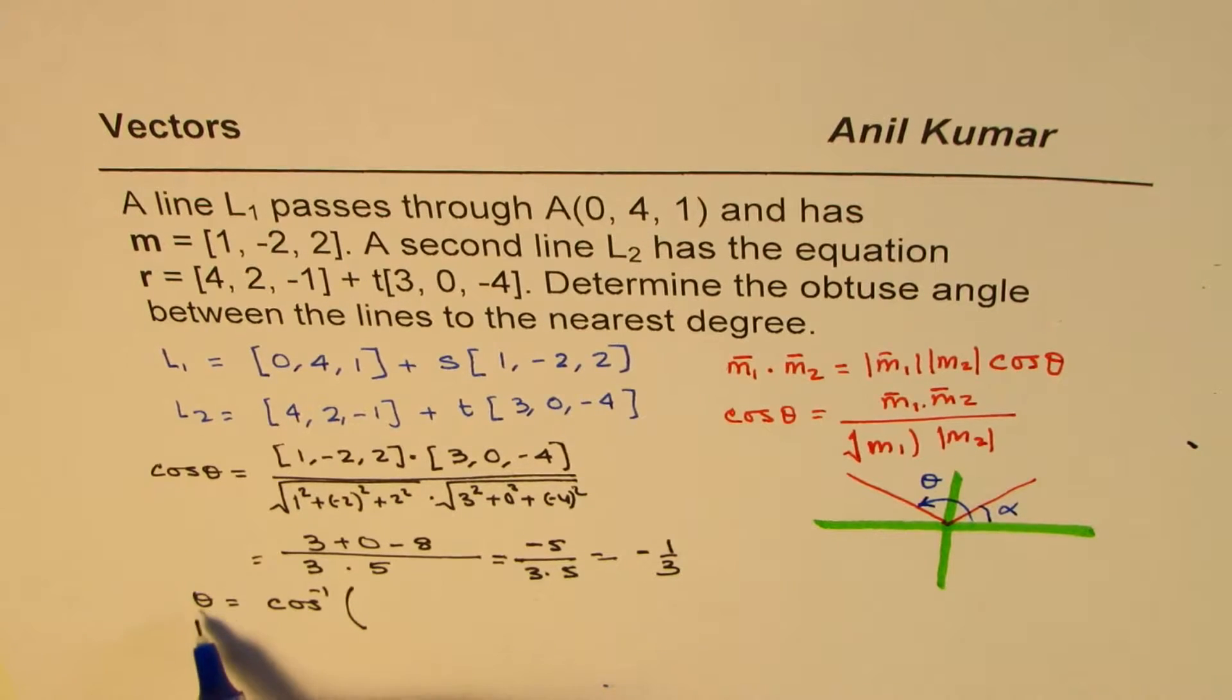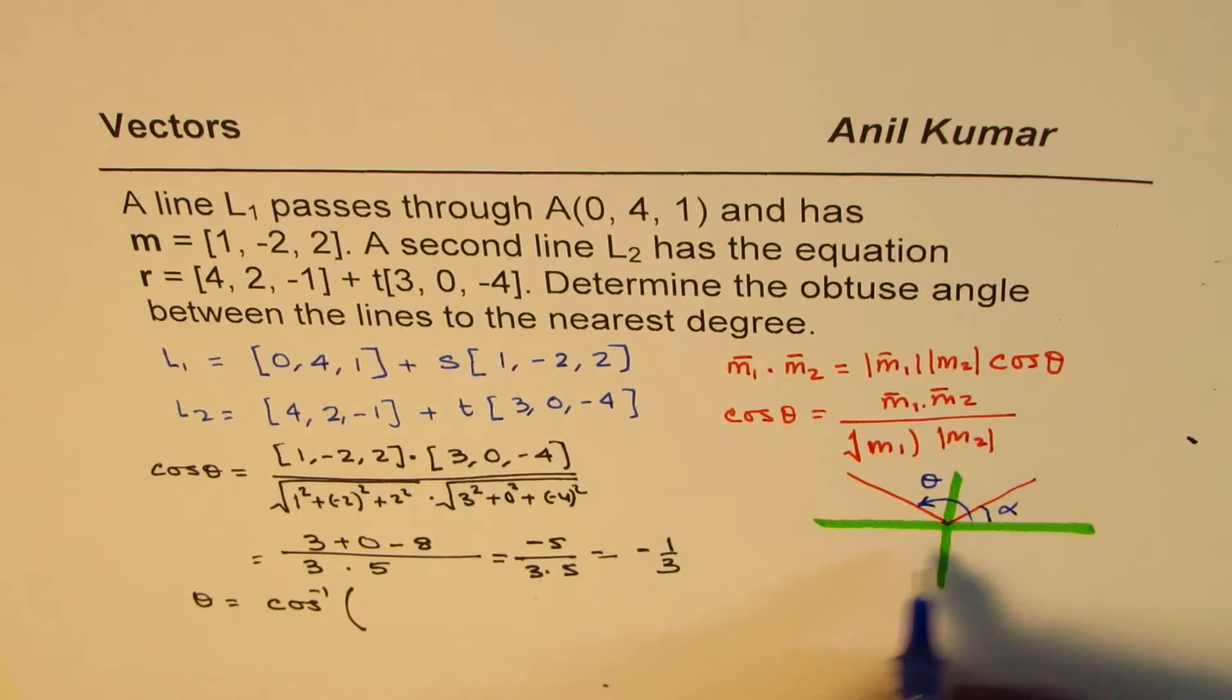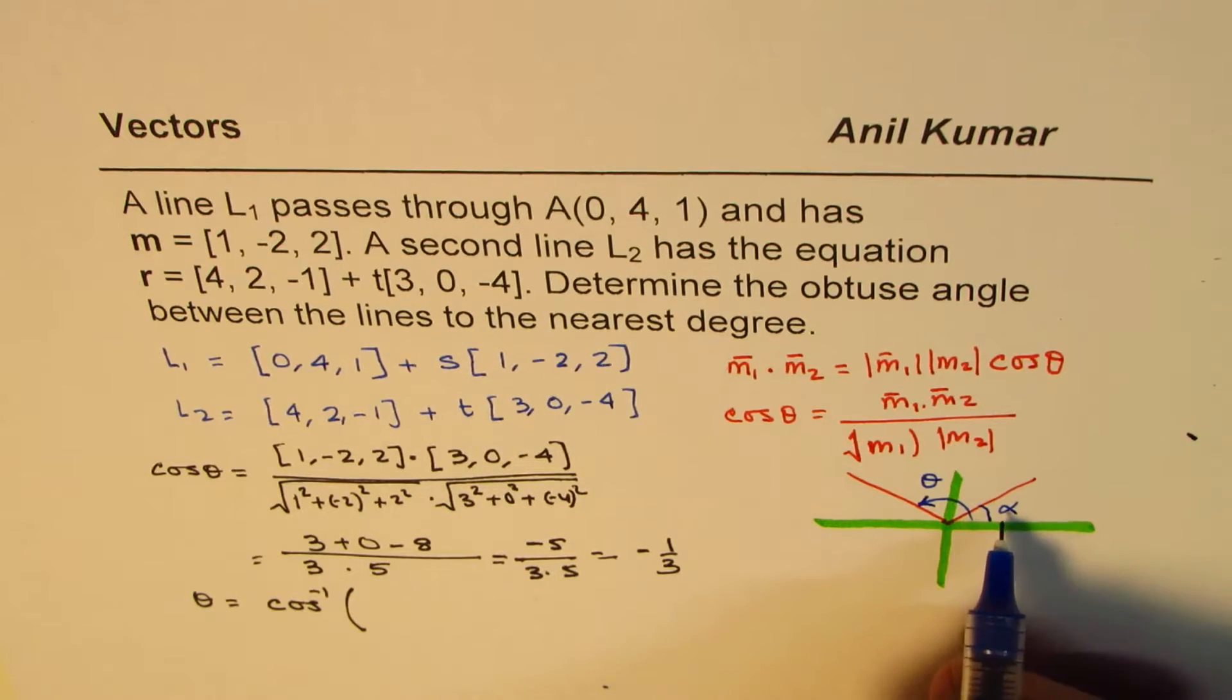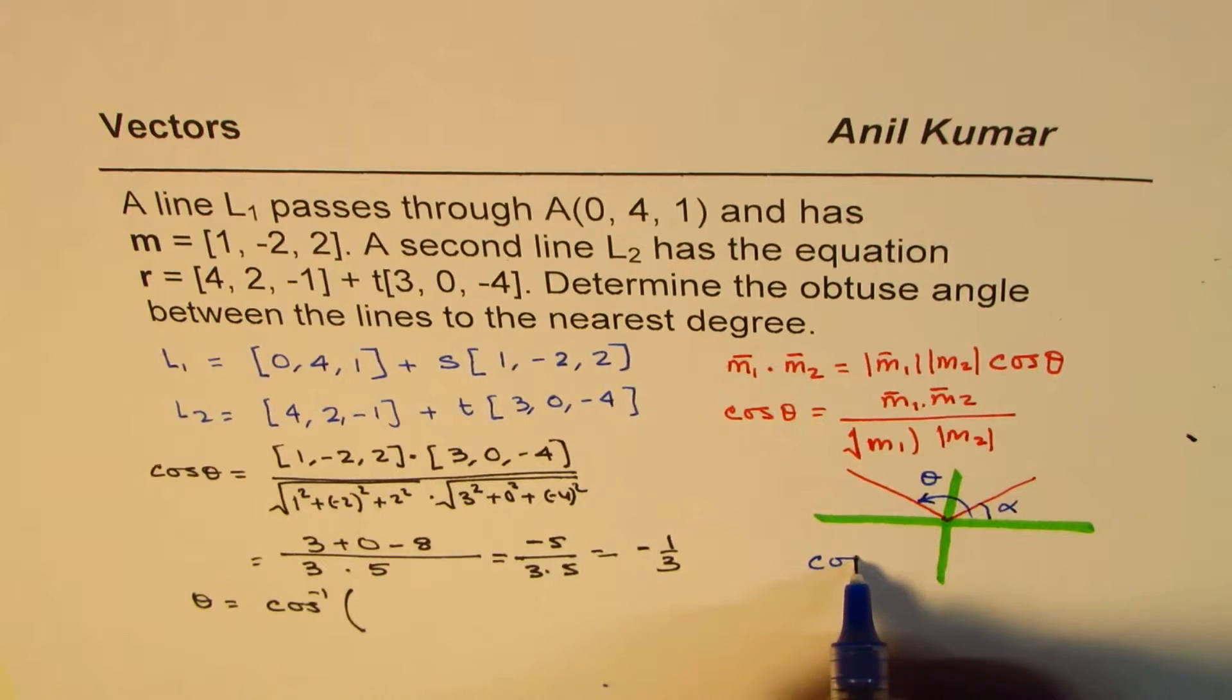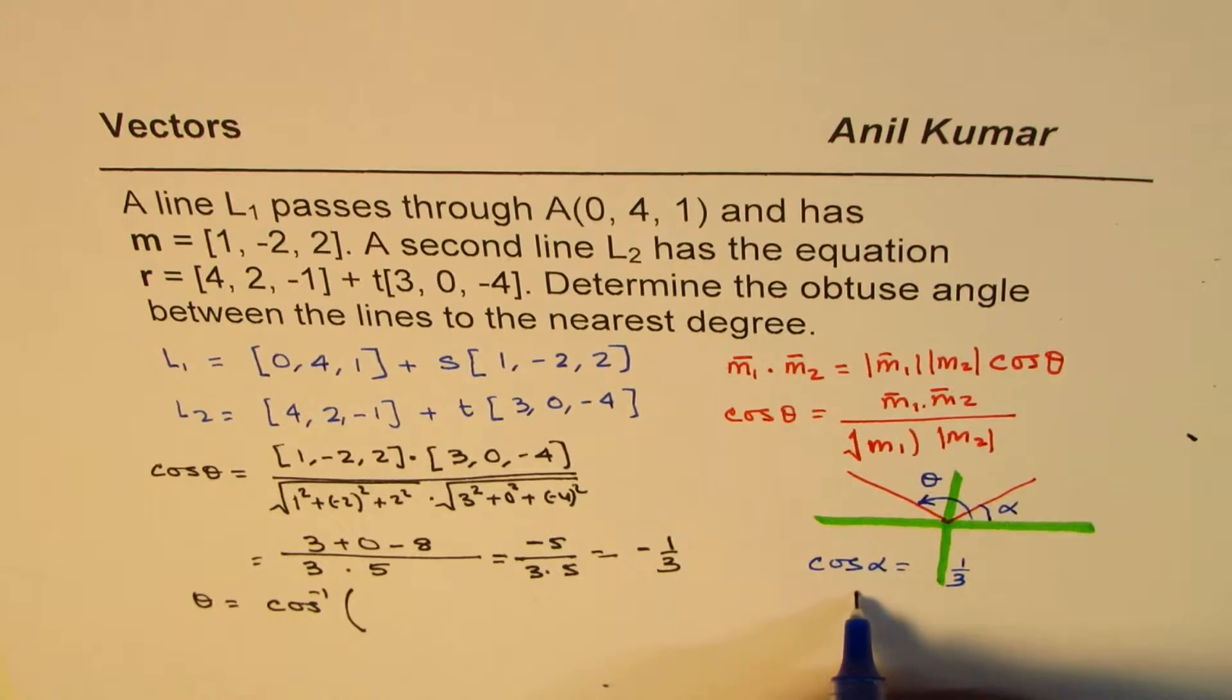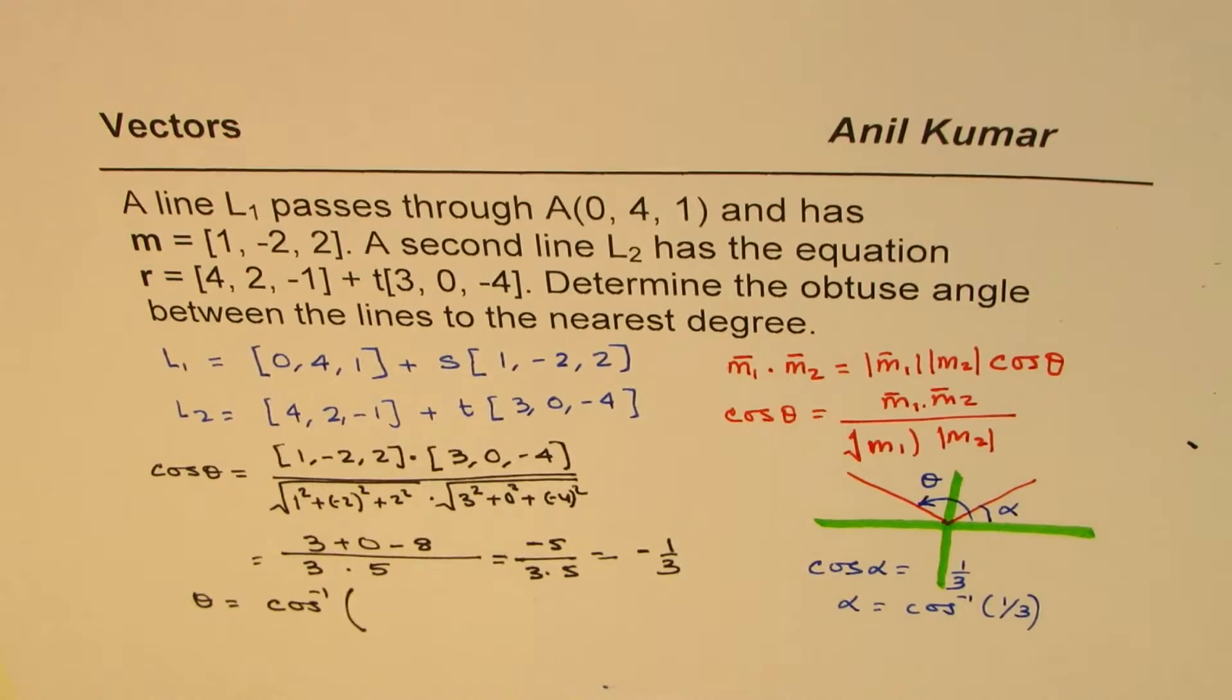Let's say alpha. And then 180 minus alpha will give us the obtuse angle theta. So that's what actually we will do. So instead of finding theta directly, you could do this also, you will get probably negative answer. But I prefer to find the acute angle alpha. So let me show you that.